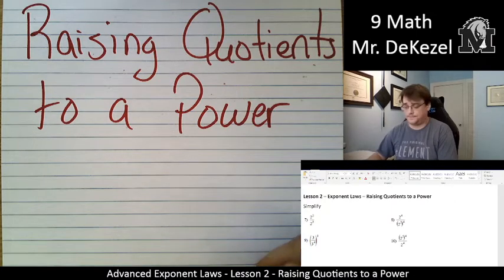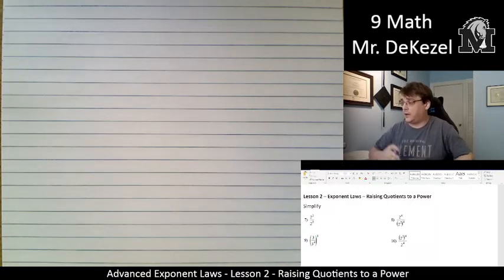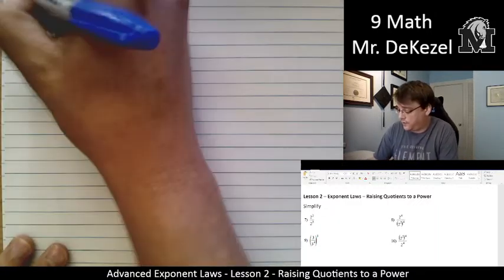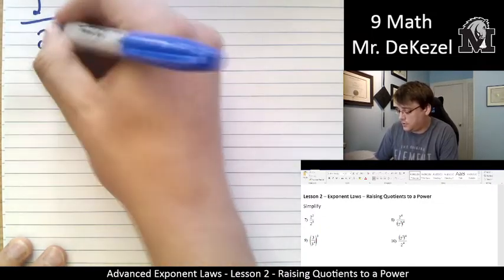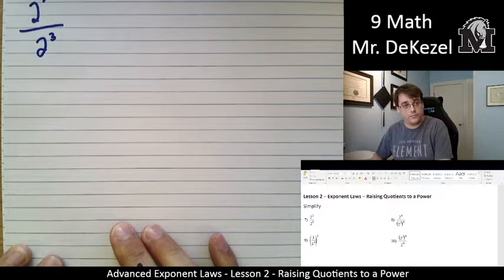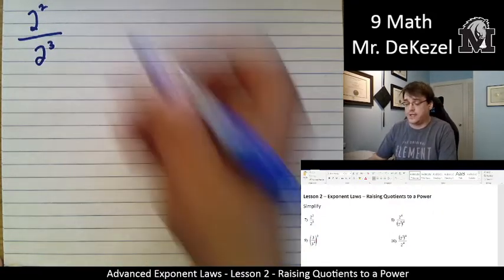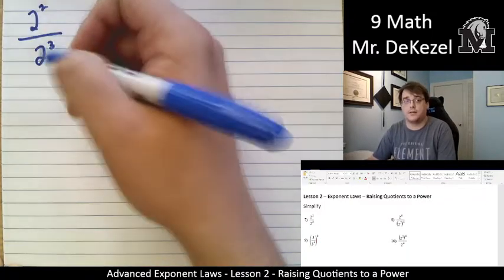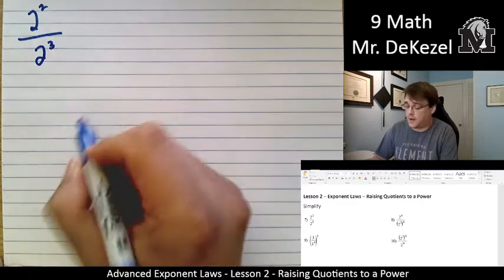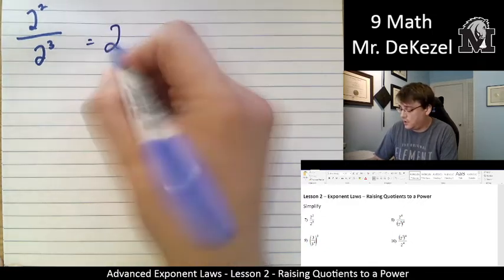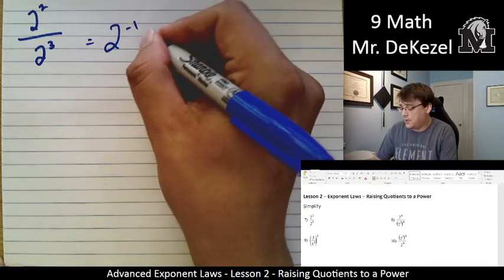All right, so we are going to write out the question. We've got 2 to the power of 2 divided by 2 to the power of 3. Okay, now you can see that. So we are going to, because they're divided by each other, same base, we are going to subtract the exponents. 2 minus 3 is minus 1, so this is 2 to the power of minus 1.